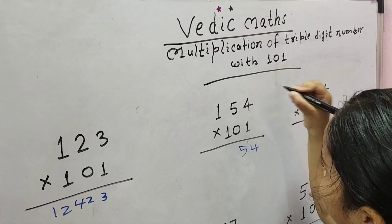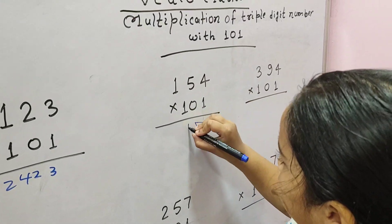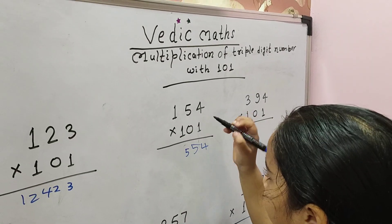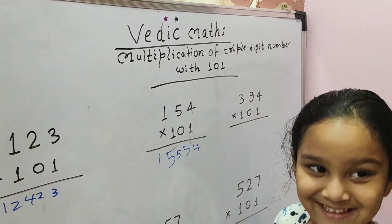154. Just 54, and then 1 plus 4 is 5, then 5, and then we'll take 15. It's so easy!